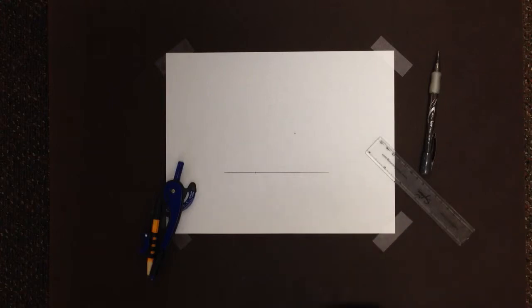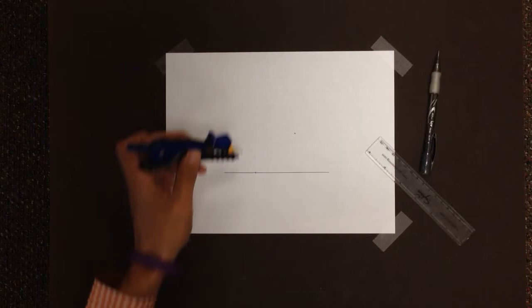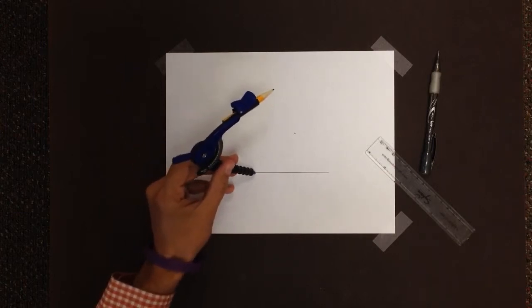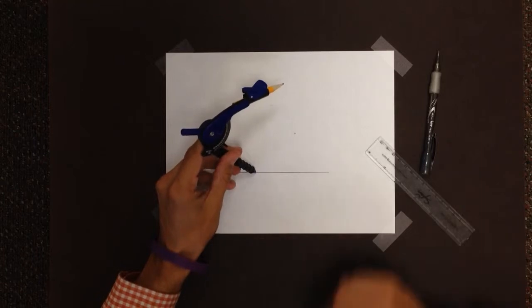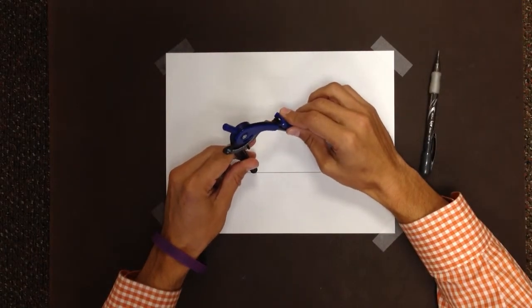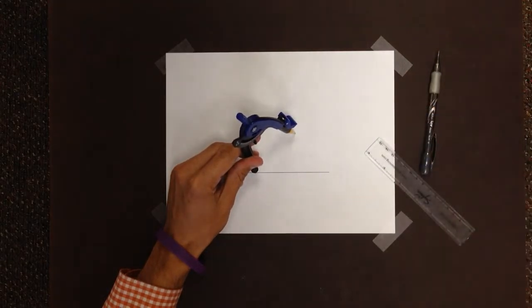So here's all we got to do. First I'm going to take my compass. I'm going to put the non-pencil end on the point that is on my line and put the pencil end on that random point that's out in space. There we go. Looks good.